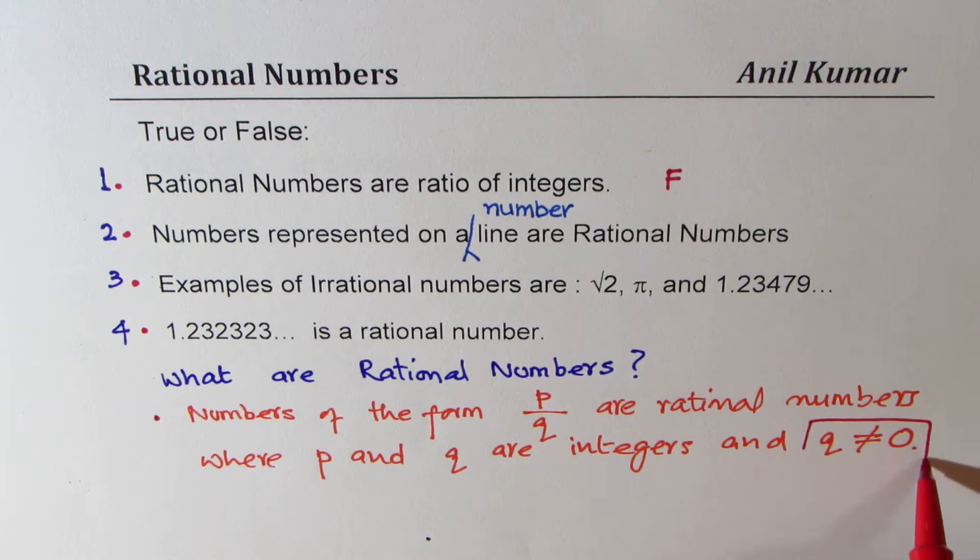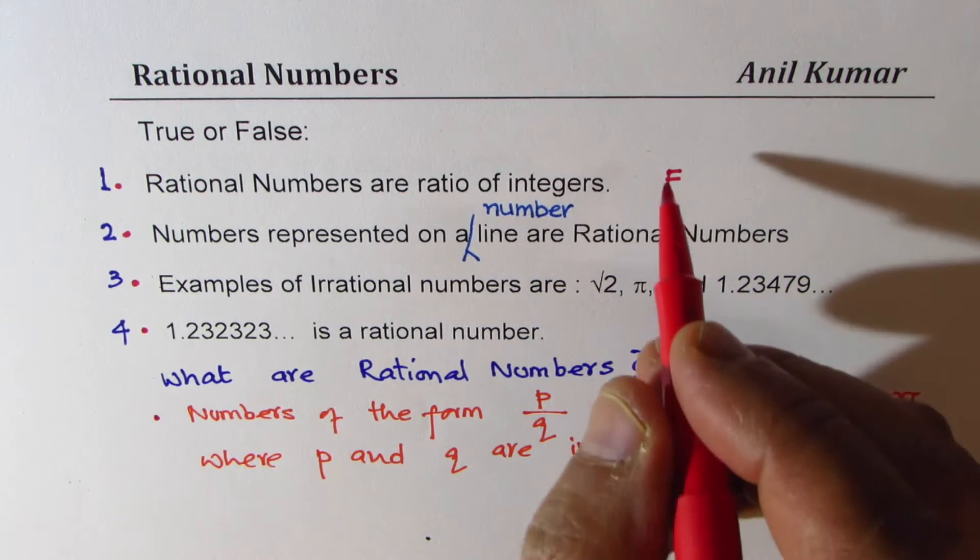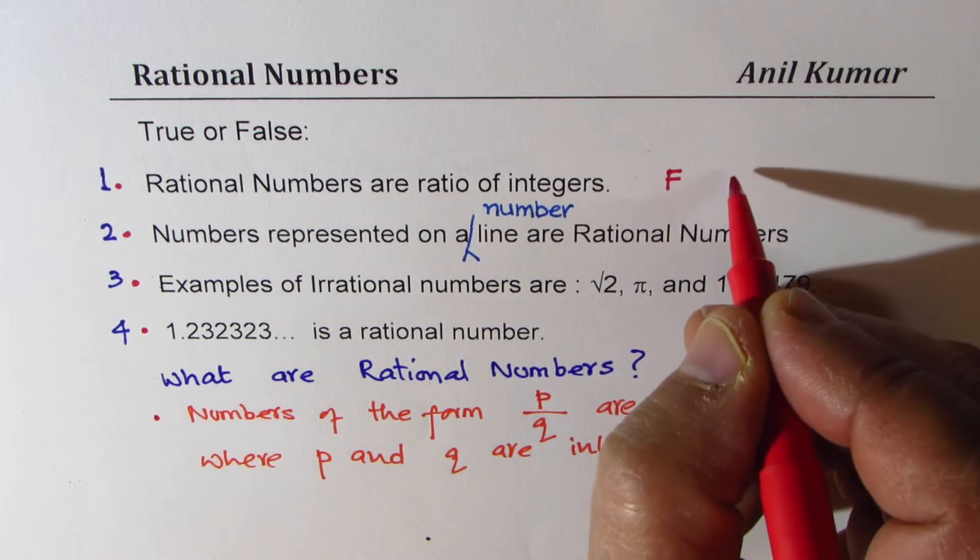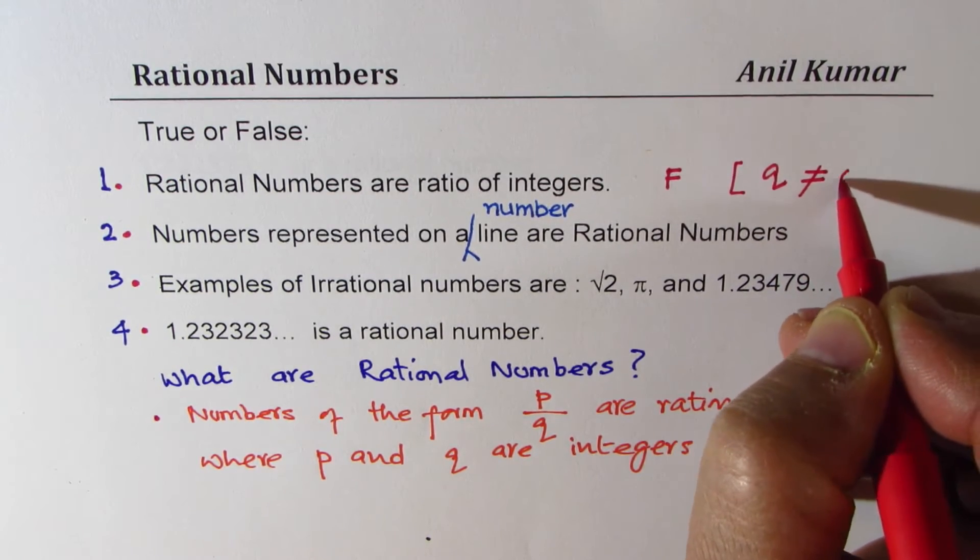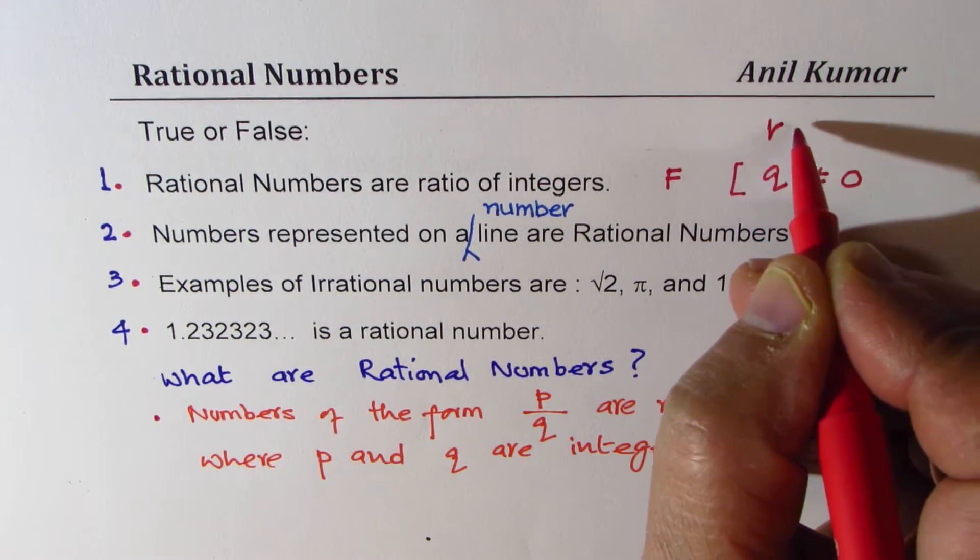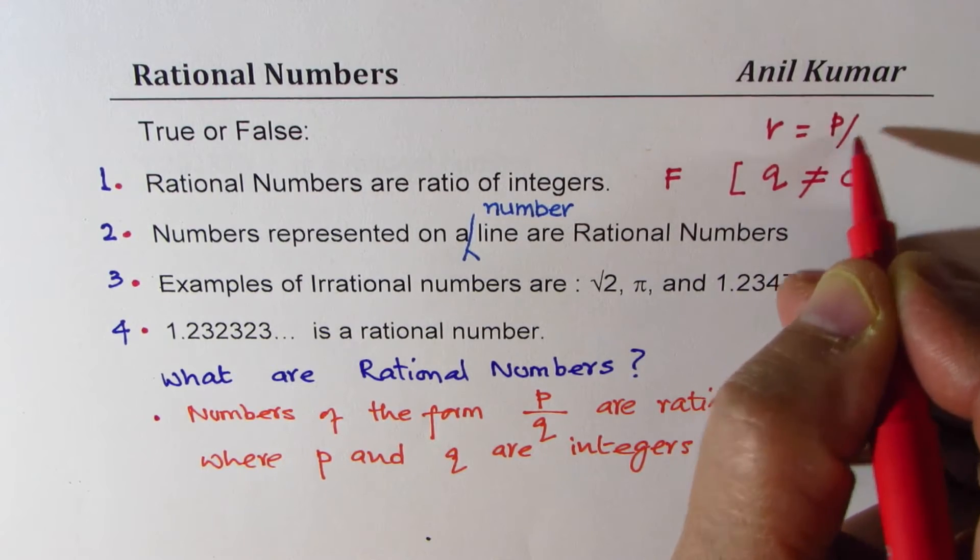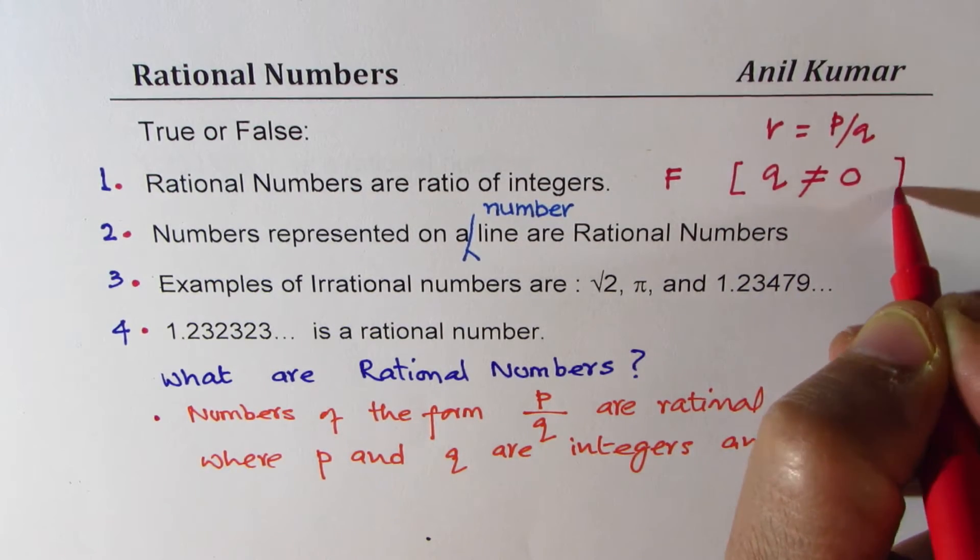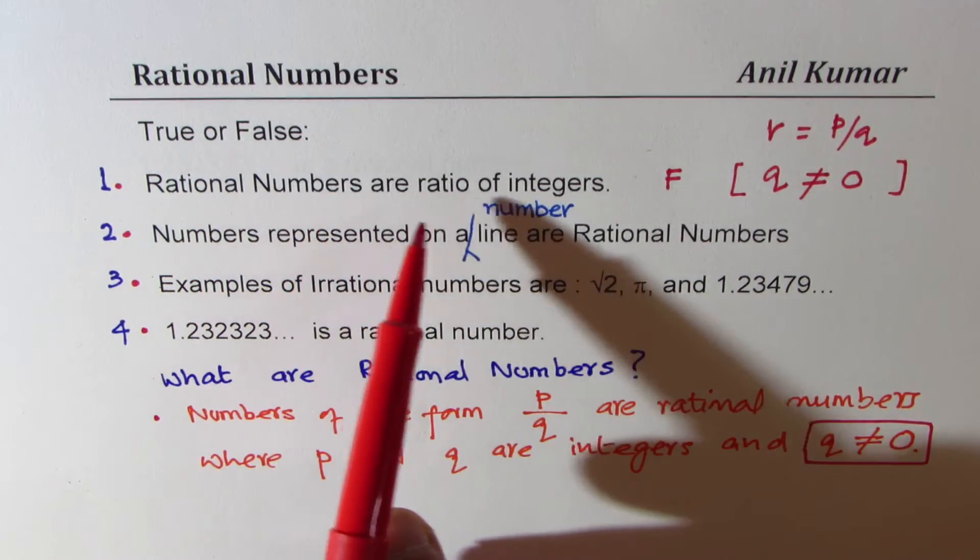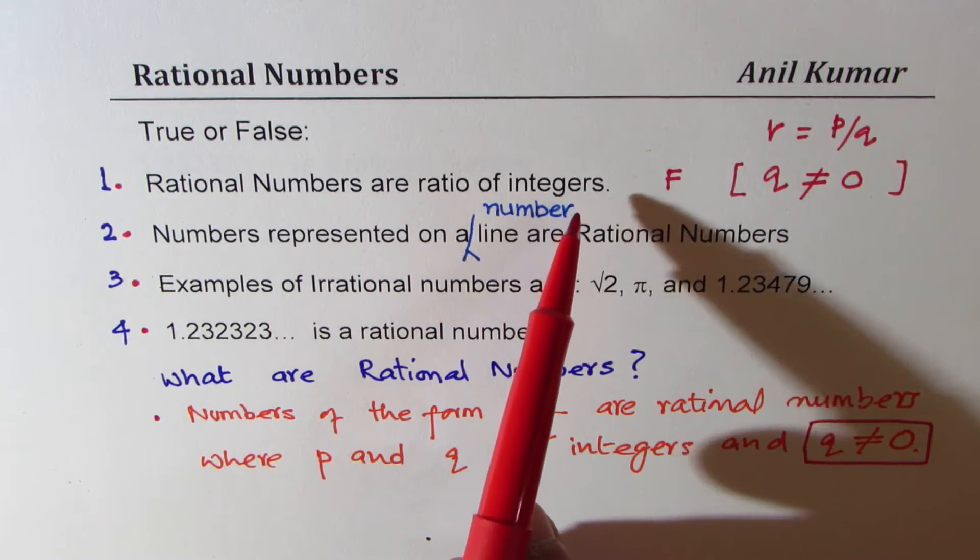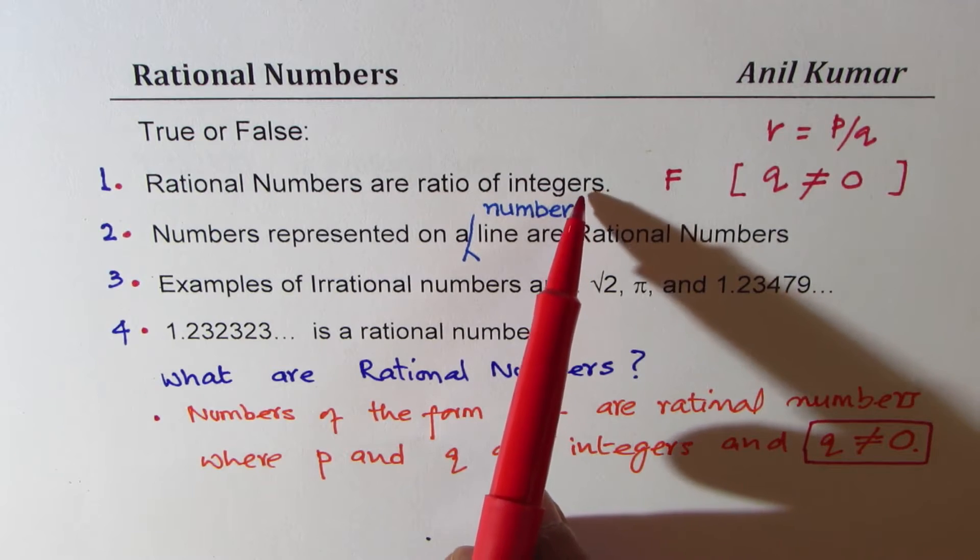What is this statement missing? The condition that Q, the denominator, should not be 0. 0 is also an integer, right? So it is false because it's missing that Q is not equal to 0 if I have rational number of the form P over Q. So that condition is missing. Therefore, rational numbers or ratio of integers is not totally correct.